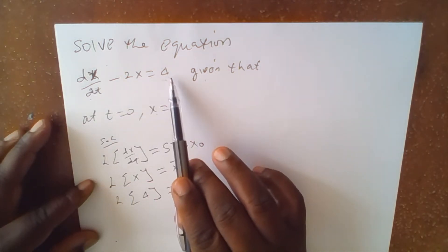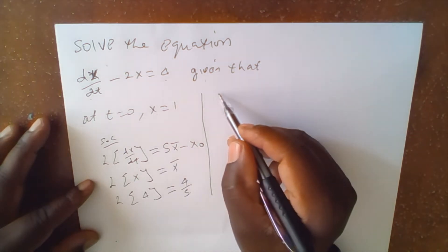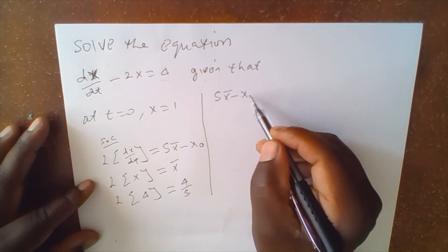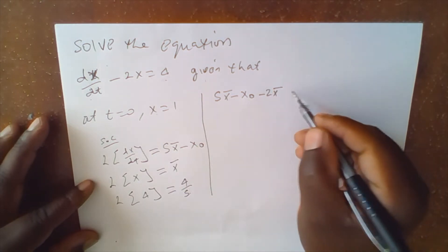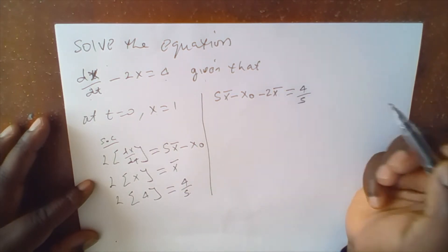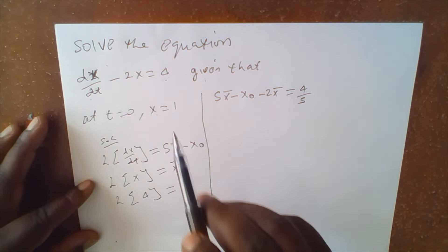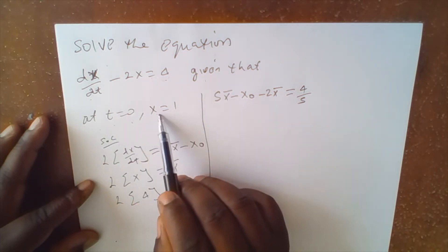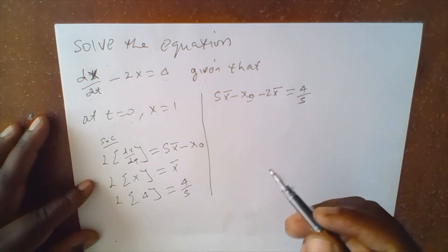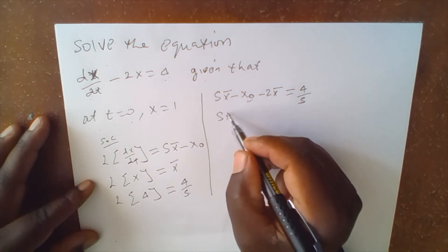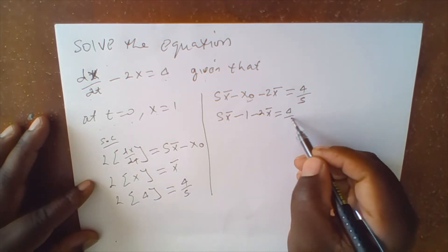Now once we have the Laplace transform of the equation, we rewrite it. The equation becomes: s·x̄ minus x₀ minus 2x̄ equals 4 over s. We now insert the initial conditions — at t equals 0, x equals 1 — so x₀ equals 1, giving: s·x̄ minus 1 minus 2x̄ equals 4 over s.